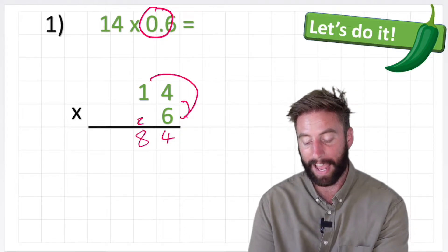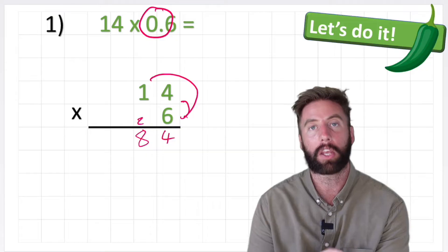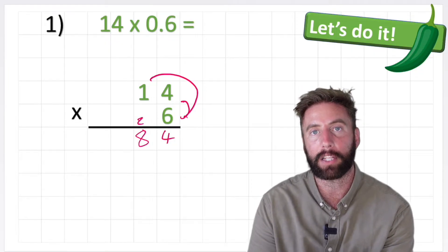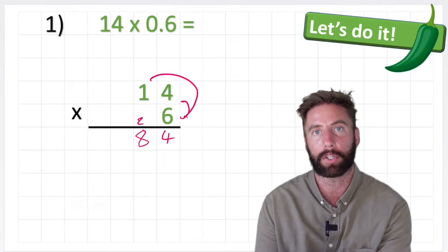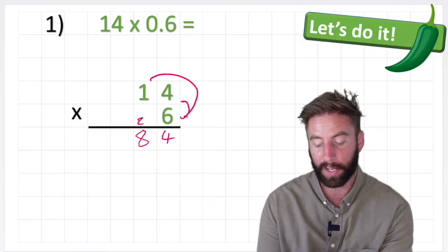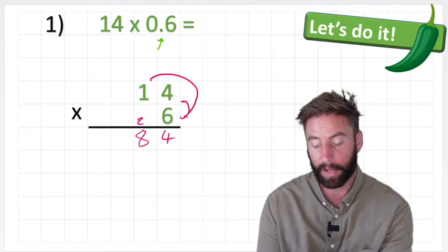So we have an answer of 84, but we haven't yet finished because we now need to put our decimal place back, and the trick for putting our decimal place back is simply counting how many numbers are after the decimal in the original question. So over here we have the decimal place just here, and we're looking for how many numbers are after it, and in this case we have 1, the 6.